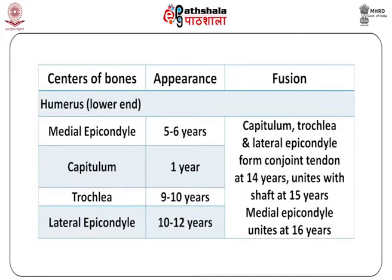At the lower end of the humerus, the center for the medial epicondyle appears at five to six years. The capitulum appears at one year, trochlea at nine to ten years, and the lateral epicondyle at ten to twelve years. The capitulum, trochlea, and lateral epicondyle form a conjoined epiphysis at around 14 years and unite with the shaft at around 15 years. The medial epicondyle unites last at 16 years.